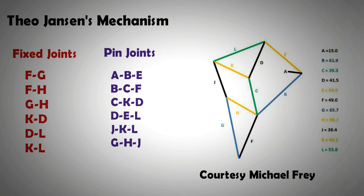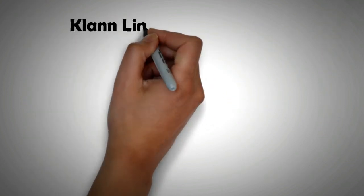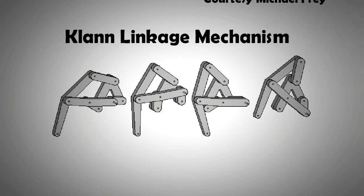Another interesting land traversing mechanism that can replace the wheel is the Klann mechanism, which is based on crab-like movement, so please do explore it.